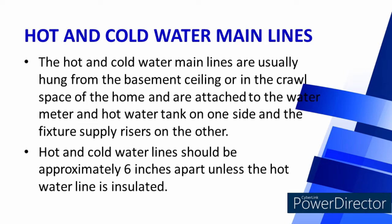The hot and cold water main lines are usually hung from the basement ceiling or in the crawl space of the home, and are attached to the water meter and hot water tank on one side and the fixture supply risers on the other. Hot and cold water lines should be approximately 6 inches apart unless the hot water line is insulated.